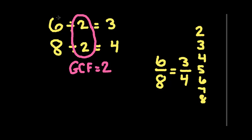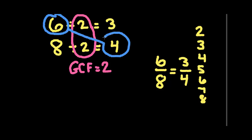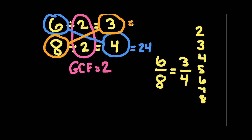Now we're going to find our least common multiple. To find the least common multiple, we take the number that we start with and multiply it diagonally times the number that we end with. So we multiply 6 times 4 and we get 24. It doesn't matter which pair you pick — if you had chosen 8 and multiplied it diagonally times the 3, you get the same answer. So our LCM, or least common multiple, is 24. And that's all there is to it.